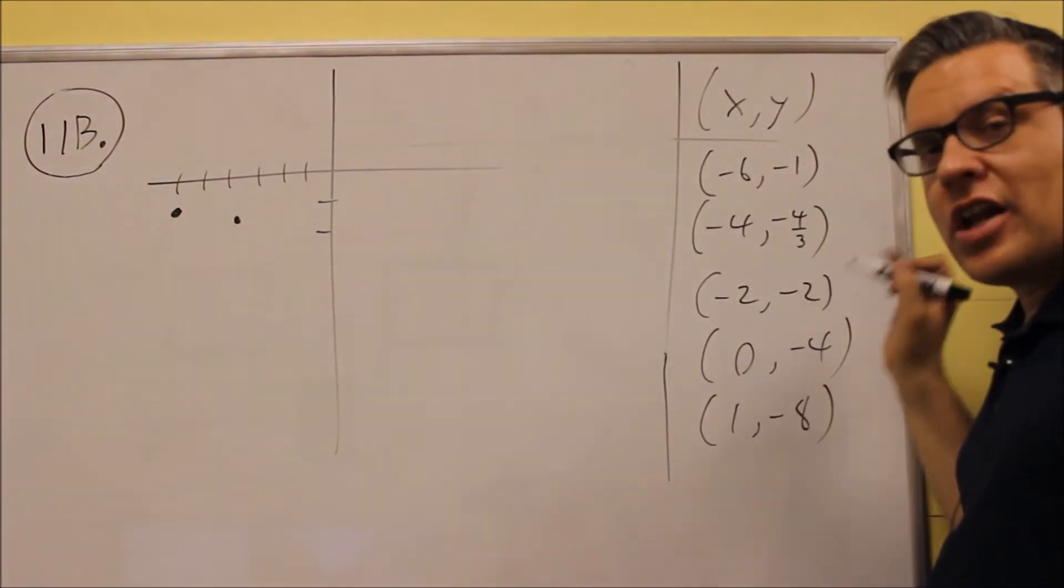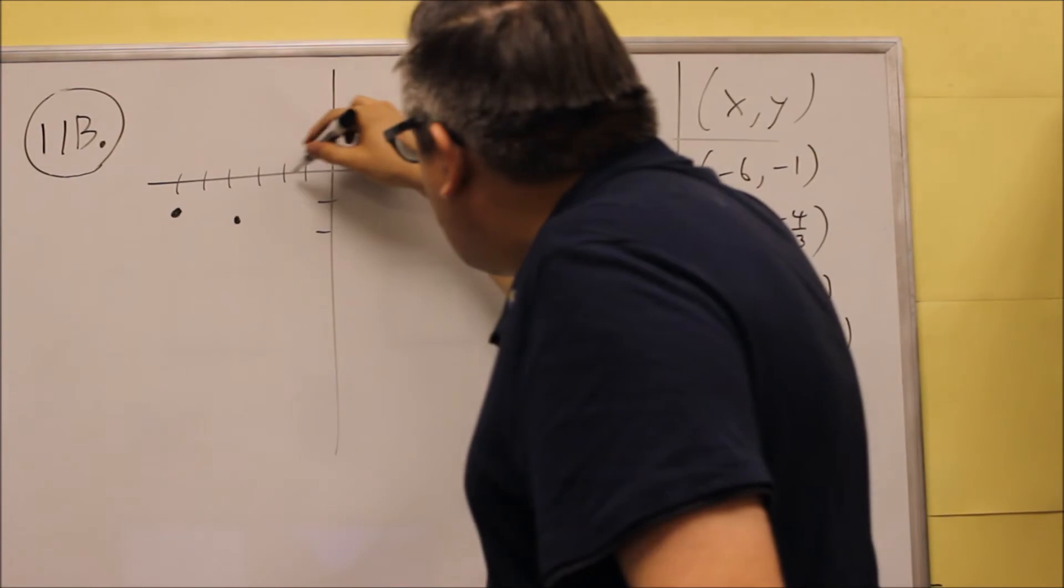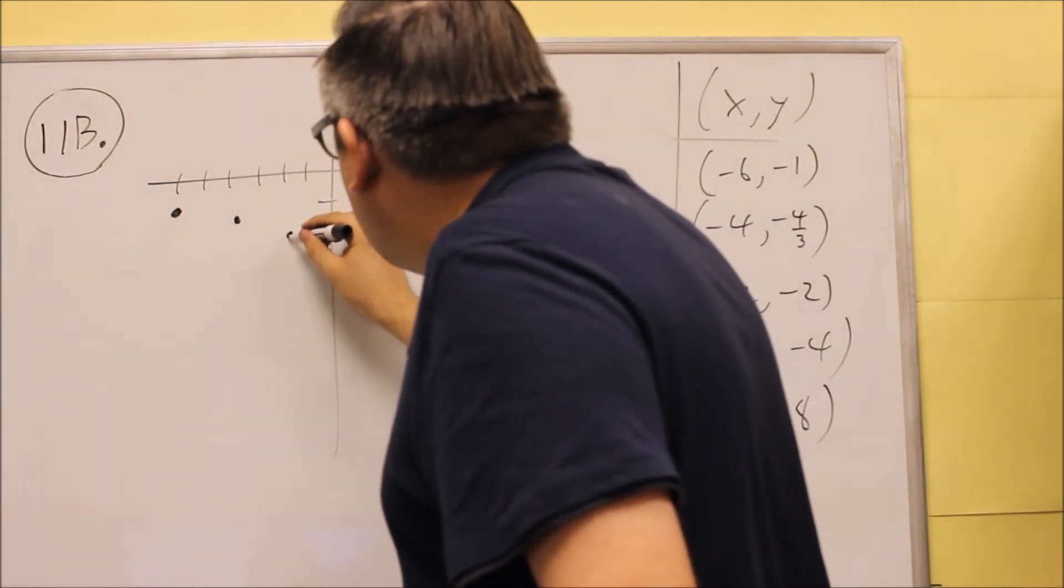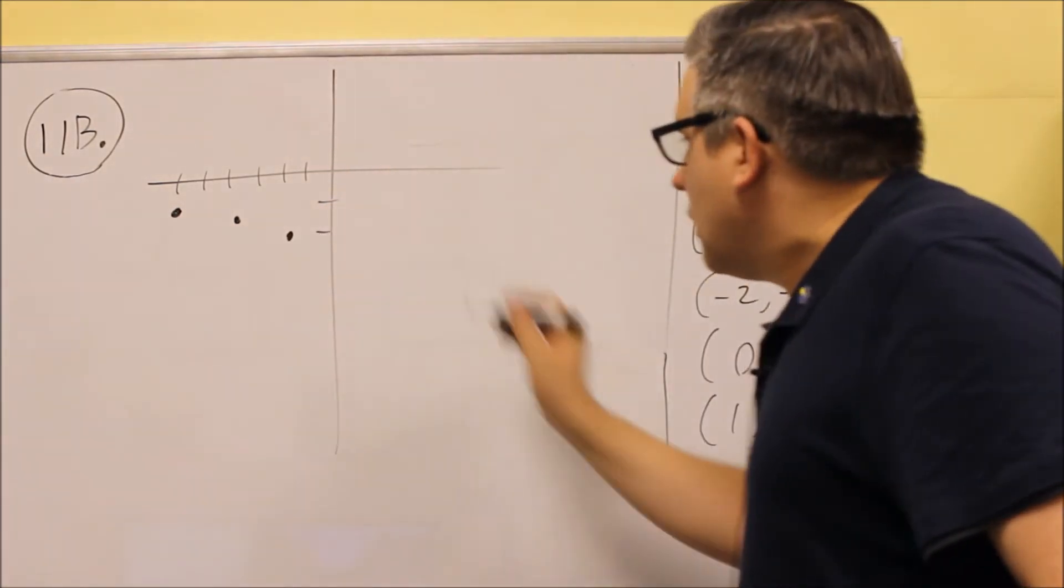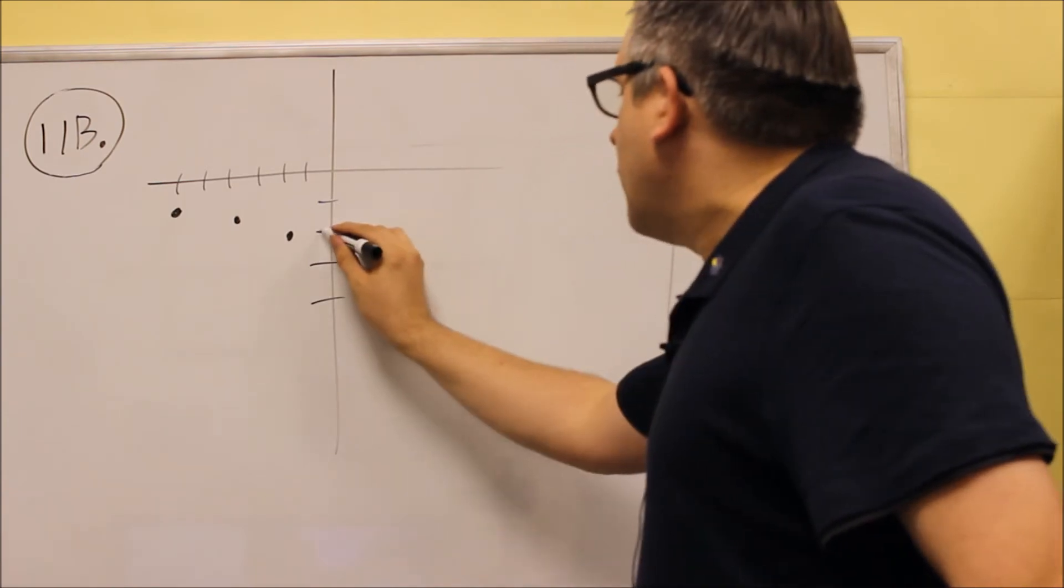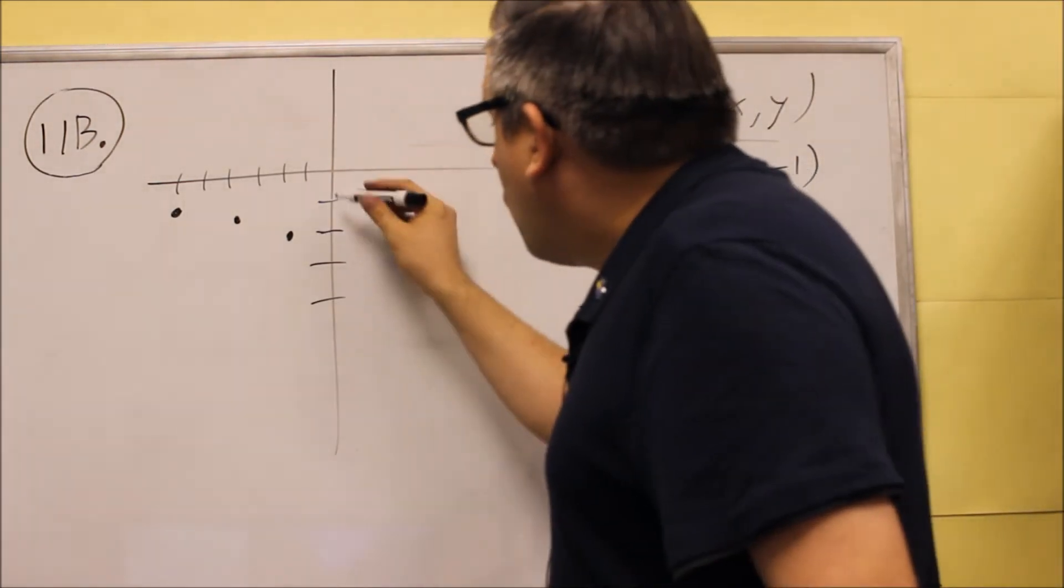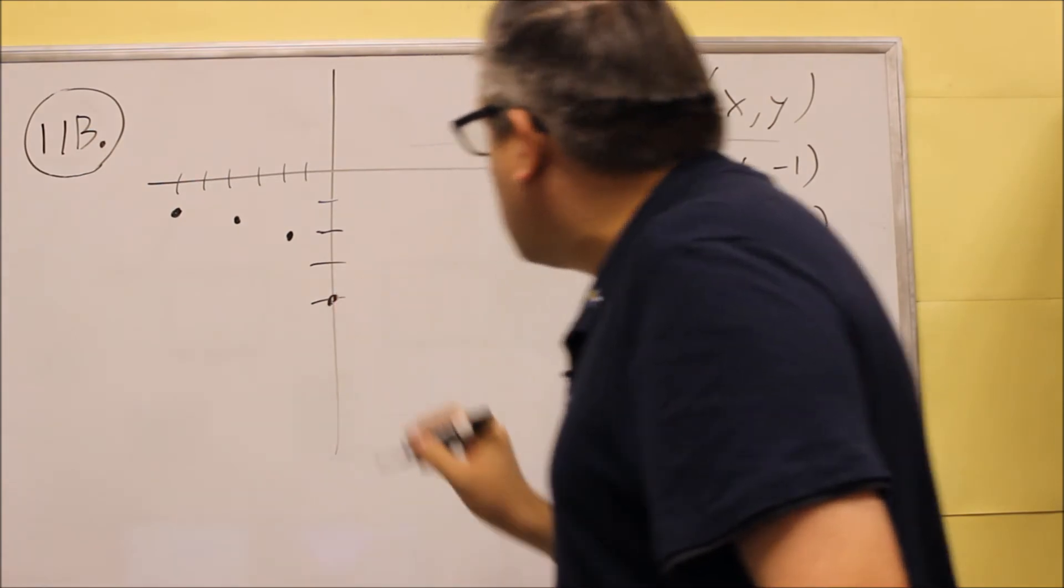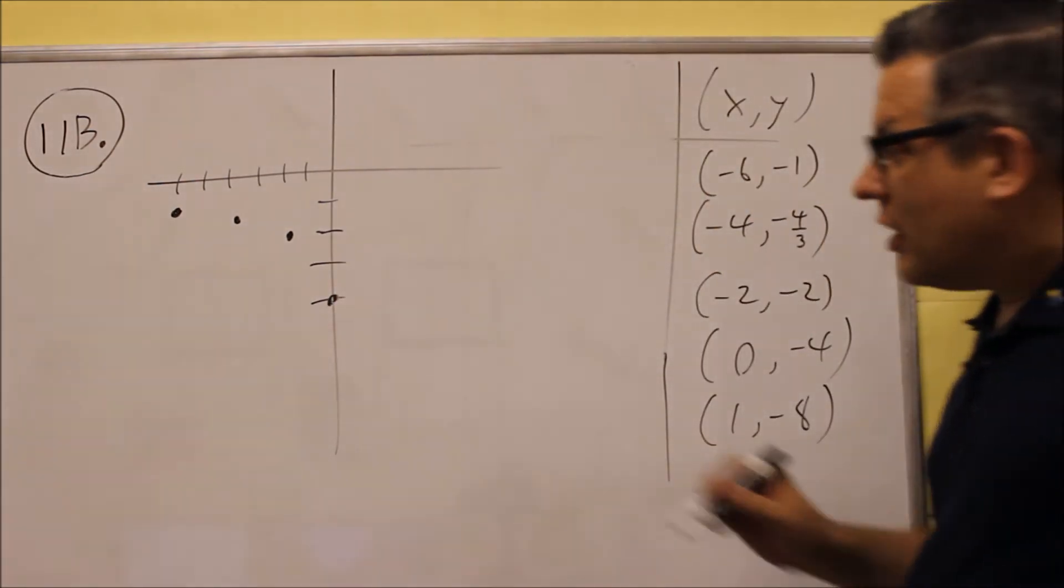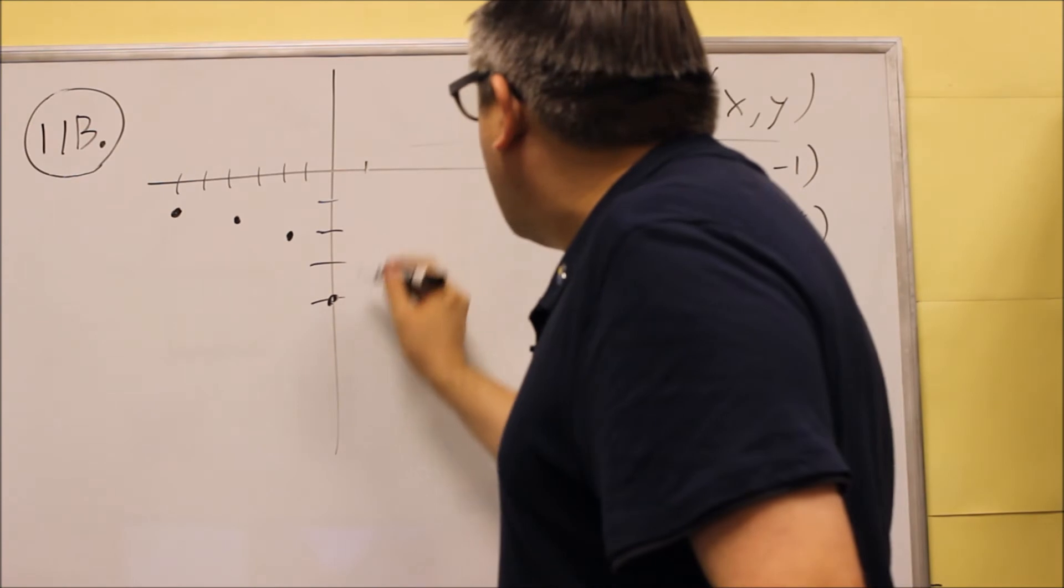Next we have negative 2 and negative 2. Negative 2 and negative 2 will be right there. And then we have 0, negative 4. So on the y axis here it will be across there at negative 4. And finally we have 1 and negative 8.